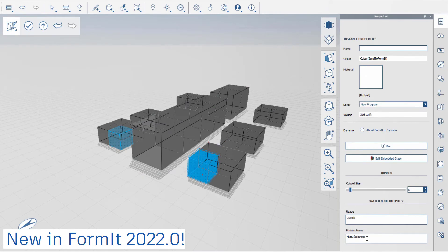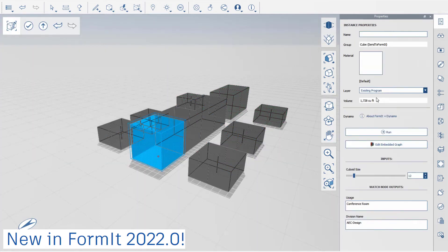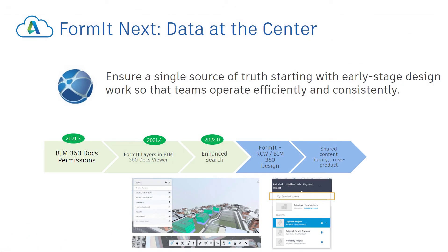The third theme is to continue to support the Autodesk Cloud. We want to ensure a single source of truth, starting with early stage design work and including all project data, so that teams work efficiently, consistently, and securely. Recent work in this area has been the ability to host Formit's content library — or your own content for Formit — on the Autodesk Cloud. We ensure permissions keep your data secure and accessible. We've also made Formit layers accessible in the Autodesk Viewer, and made it easier to search for projects on your Autodesk Cloud Hub. Our next steps are to share and access more Formit data on the Autodesk Cloud, and to support the seamless exchange of data between Formit and BIM Collaborate Pro, or Revit Cloud work sharing.